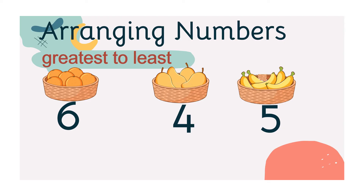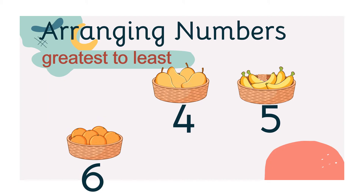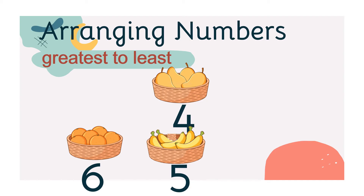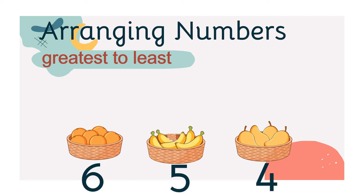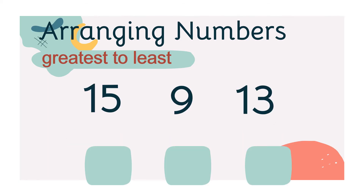So, we have 6 oranges, we have 4 mangoes, and we have 5 bananas. Now, let's try to arrange the numbers from greatest to least. The greatest number, or the biggest number, is number 6. Next, we have 5. And the least number is number 4. So, if we arrange the numbers from greatest to least, we have 6, 5, and 4.